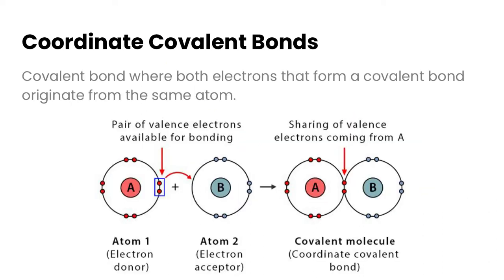Now let's move on to coordinate covalent bonds. So coordinate covalent bonds is a covalent bond where both electrons that form a covalent bond come from the same atom. So if we take a look at our example here, we have atom one which has two electrons that's the donor and none in B. So when this forms a covalent bond, both are actually being donated from the A molecule and none are coming from the B. So that is what is called a coordinate covalent bond.